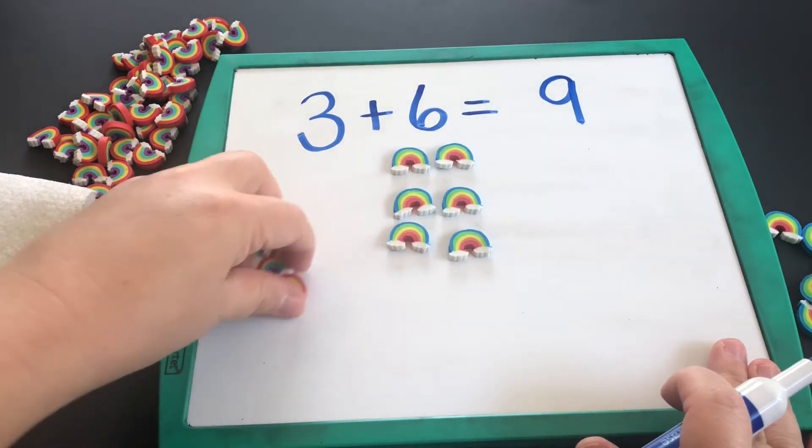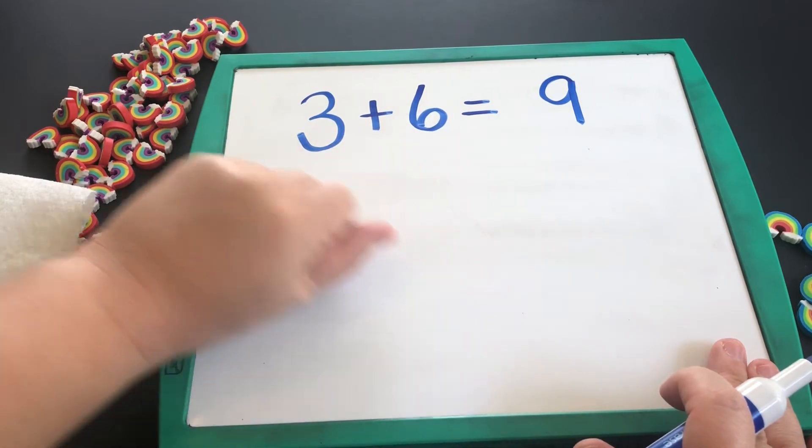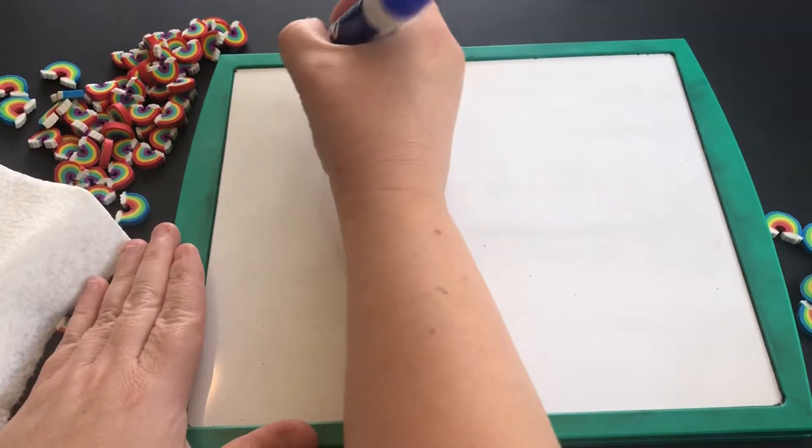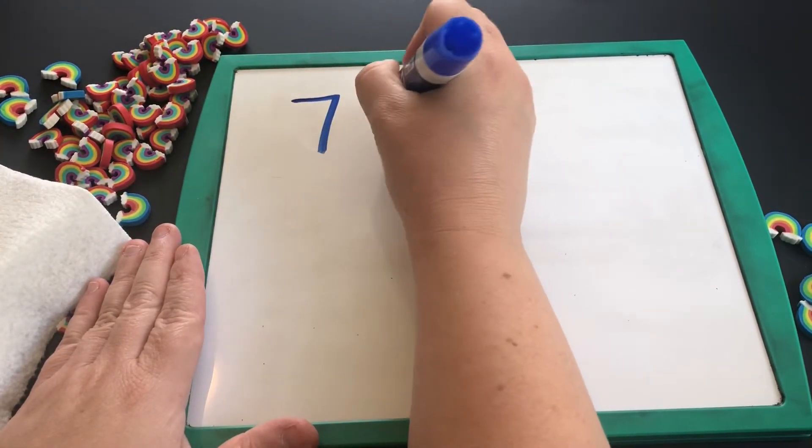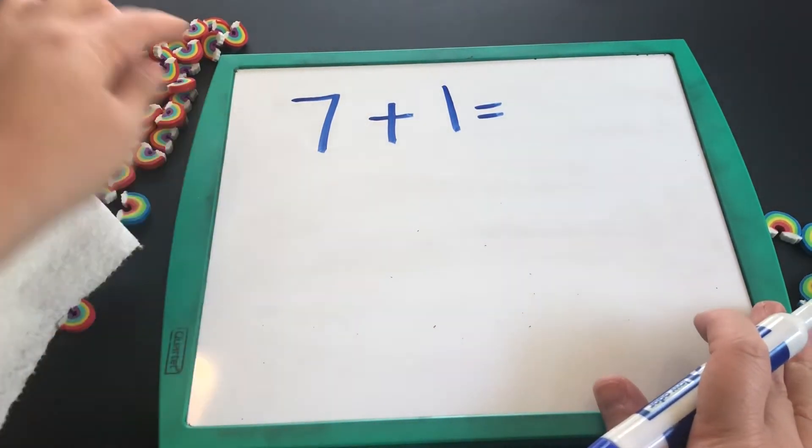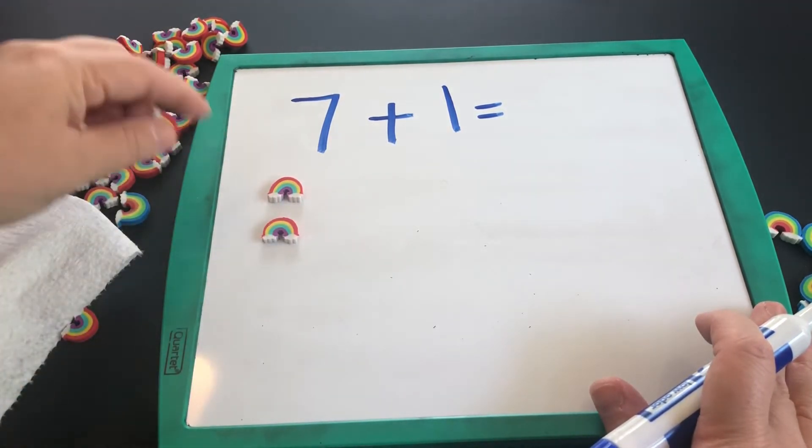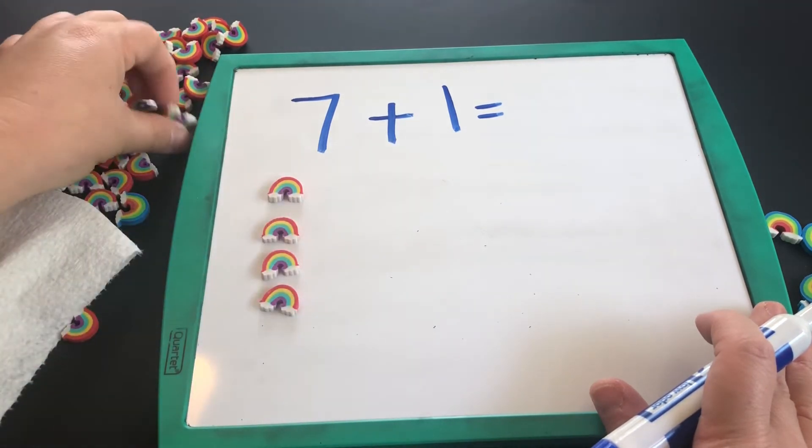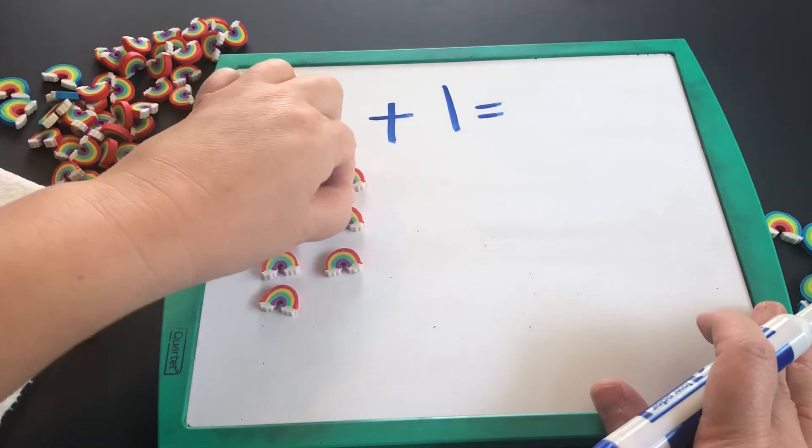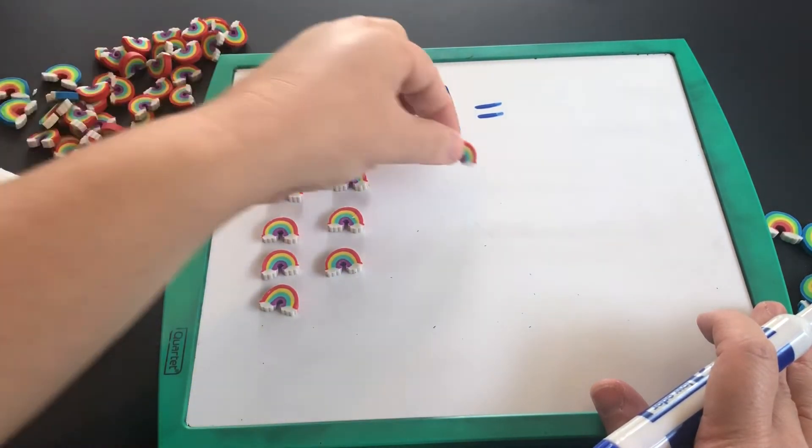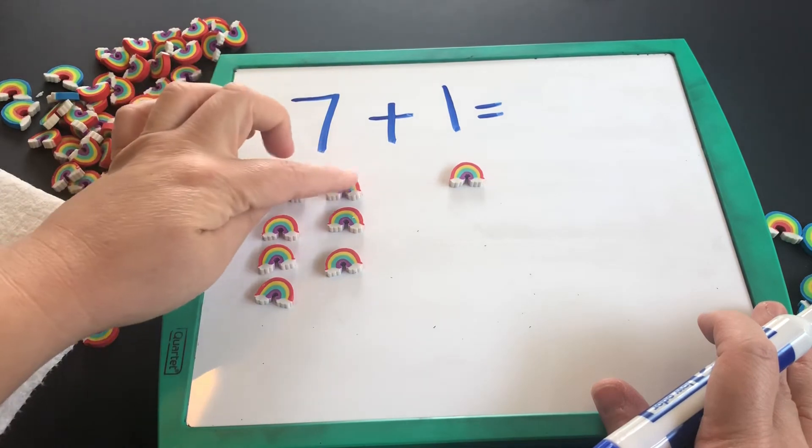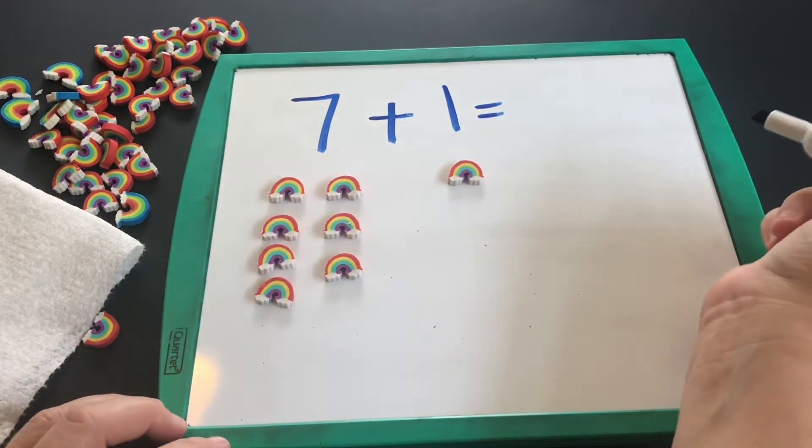Very good, boys and girls! Let's try another one. Let's try seven plus one equals... So I have seven rainbows—one, two, three, four, five, six, seven—and I'm going to add one more rainbow. So I will have one, two, three, four, five, six, seven, eight. So I have eight rainbows.